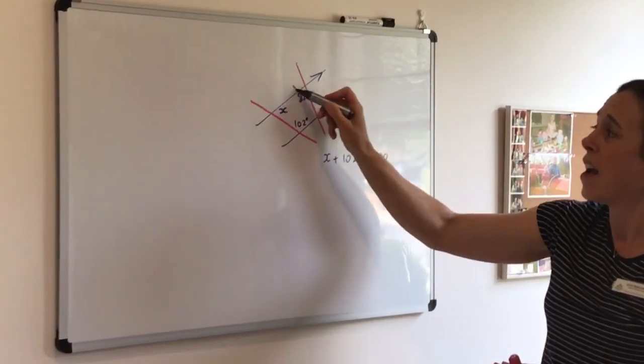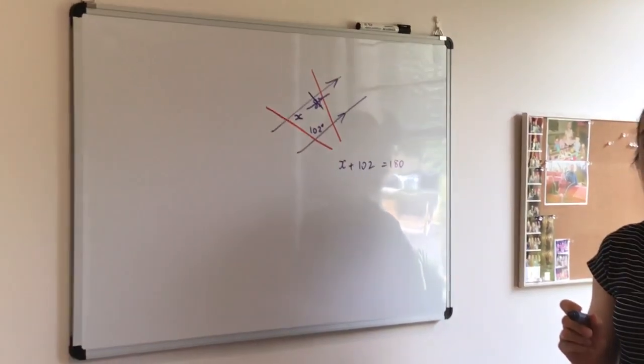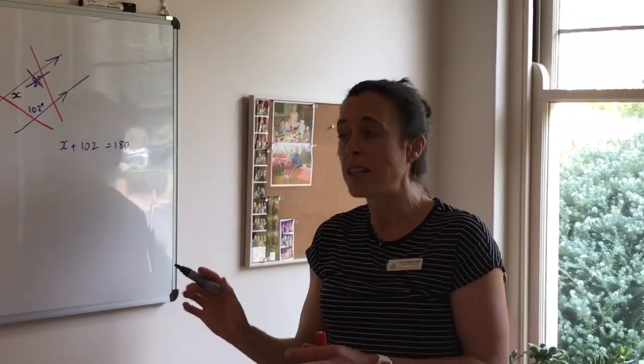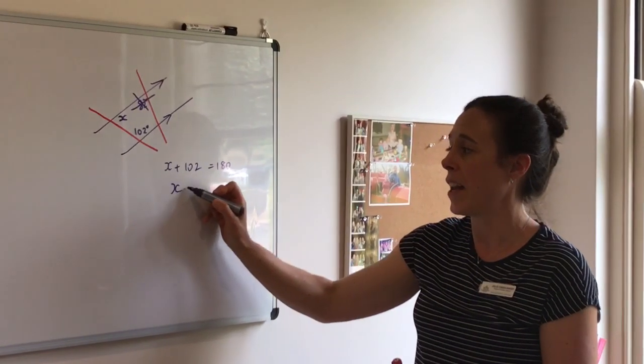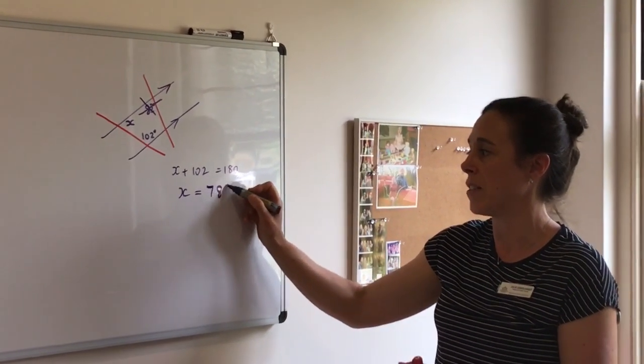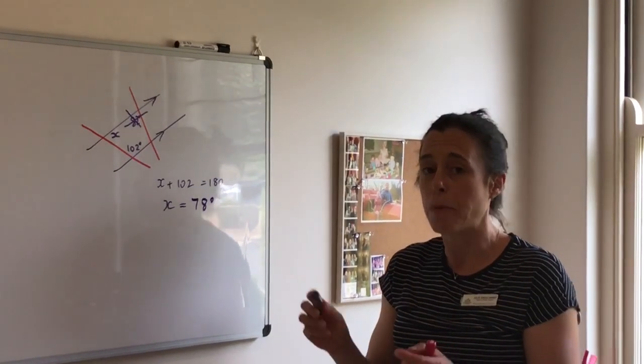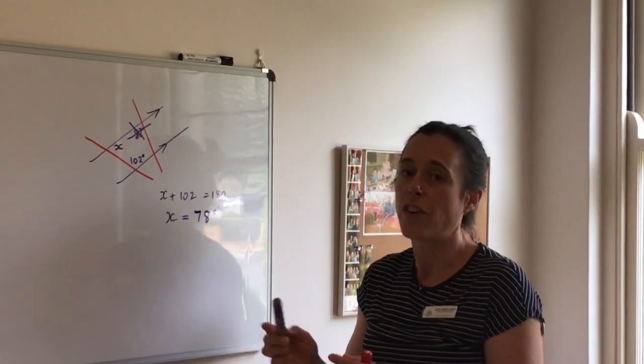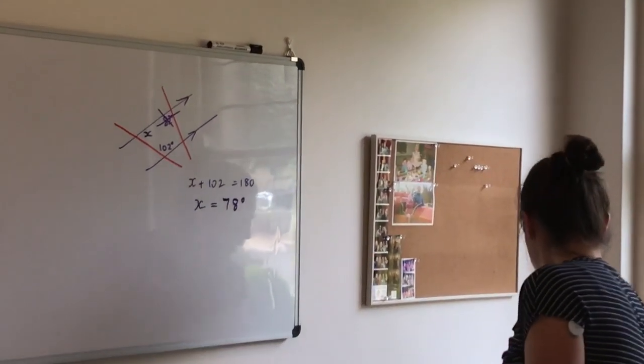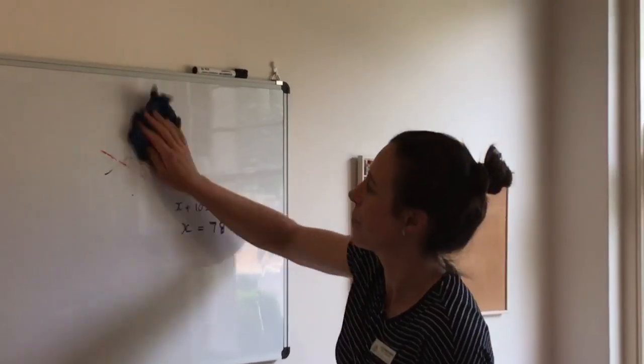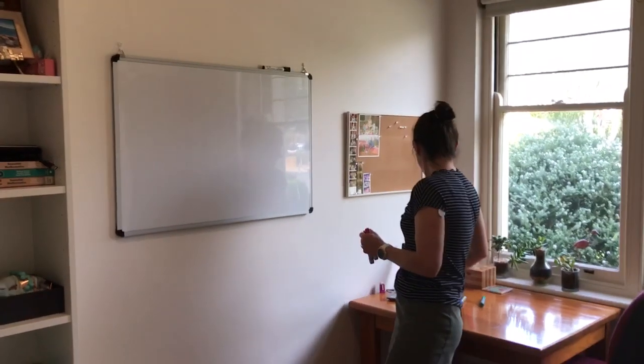In this instance, I'm not using that piece of information. I'm ignoring it because I only need this information to solve my problem, and I can find that x is equal to 78 degrees. So be careful. Don't think you have to use all of the information that you're given.